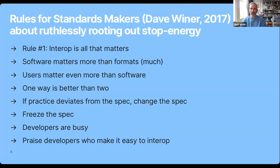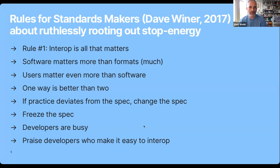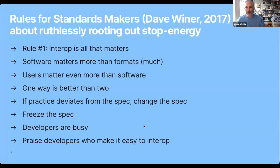The first rules are about creating belief that it's possible to work together — interoperability matters, software matters, users matter more. The later ones are about reducing friction: one way is better than two, freeze the spec, remember that developers are busy. What Winer doesn't say — because he's so good at it and takes it for granted — is that you also have to create desire: a gregarious desire. People have to easily see the value, want to get involved, and tell their friends. His final rule, 'praise developers,' is a nod to that.